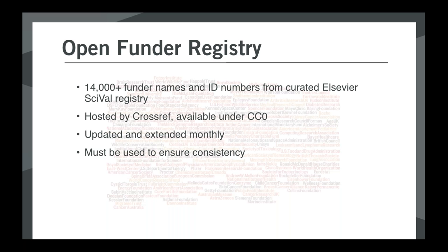The registry can also track relationships between funders. If there are name changes or mergers, there's vocabulary in the registry that says 'this is now known as' and 'this was previously known as.' It's this list of funders that publishers and their vendor partners use to make sure that the canonical name of the funder is contained in the metadata, replacing the author's own interpretation of that name.